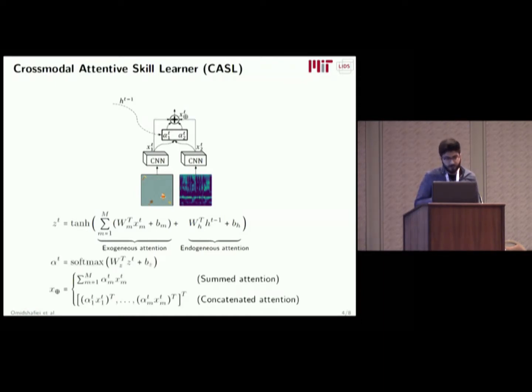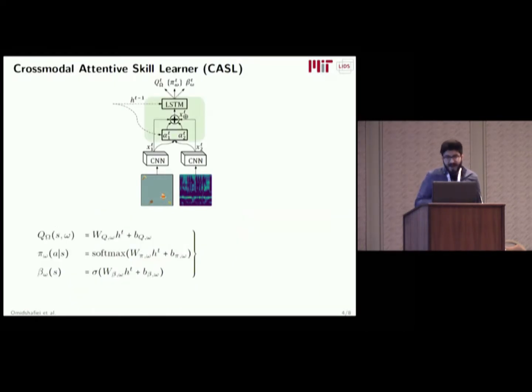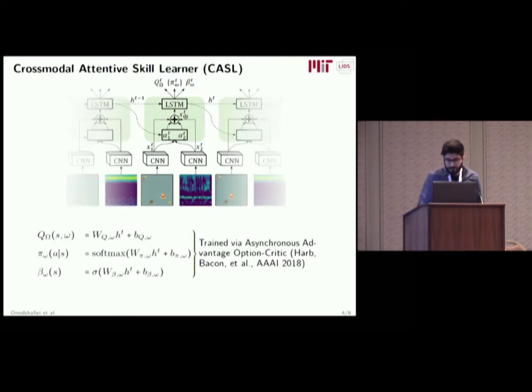Using these attention features, we can compute an attention vector over these sensory modalities and then compute an attended feature input, either using summation or concatenation. We then pass these into a recurrent net, such as an LSTM. We compute option value functions, intra-option policies pi, and option termination functions that tell us when to terminate the options. We train this entire thing using back-prop through time via the Asynchronous Advantage Option Critic framework, or the A2OC framework.